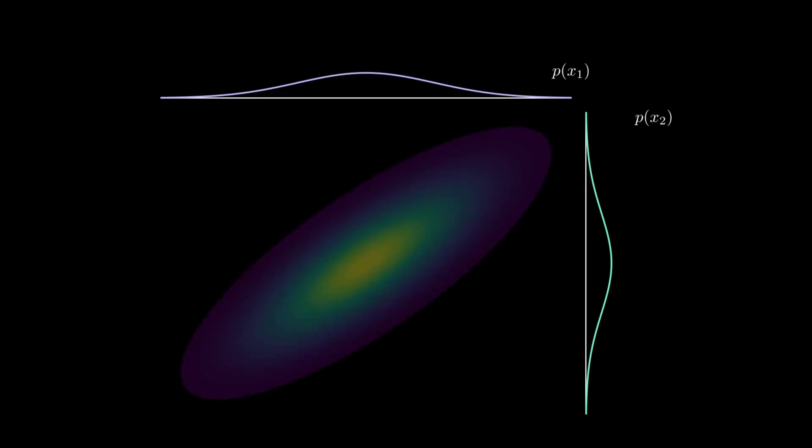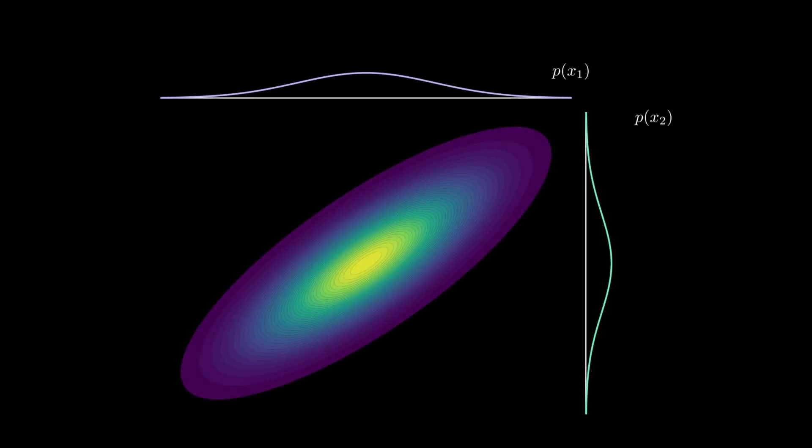For example, if we have two identical marginal normal distributions and a correlation of 0.8, the joint distribution must look like this. But that's actually not true.